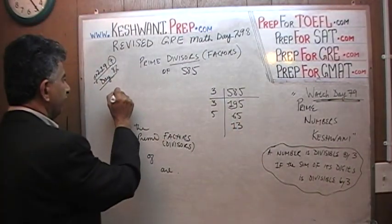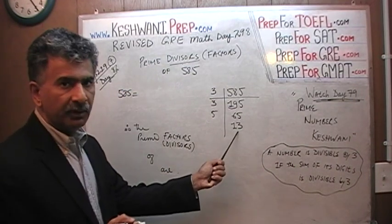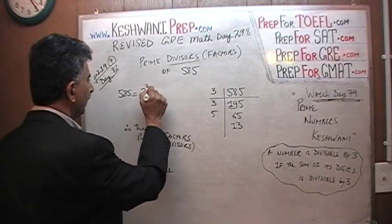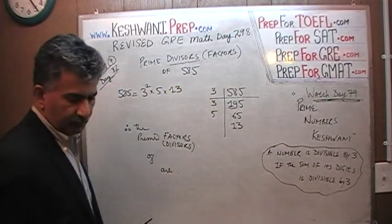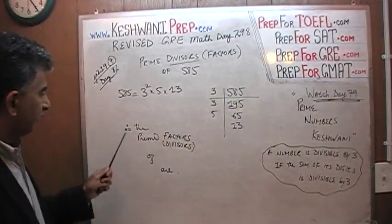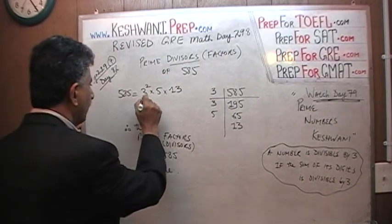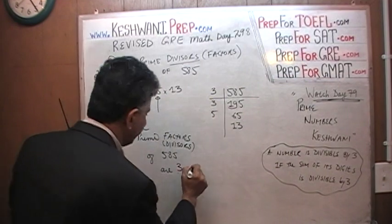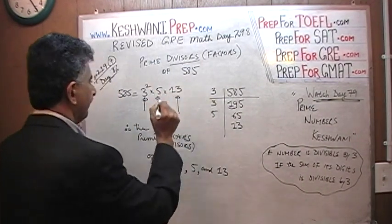In other words, 585 equals 3 squared times 5 times 13. We are done because when we get to a prime number at the end, that's the end of the story. Therefore, the prime factors of 585 are 3, 5, and 13. 585 has only 3 prime factors.